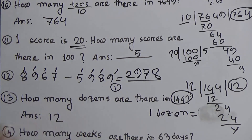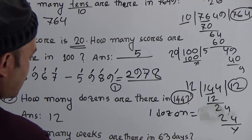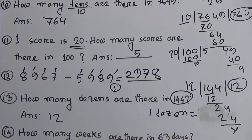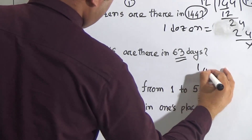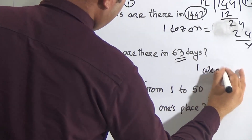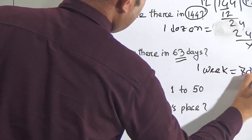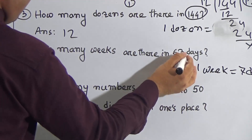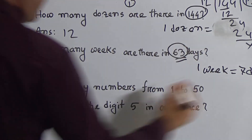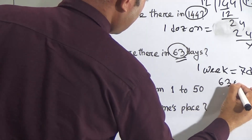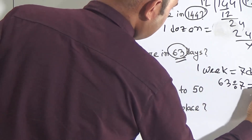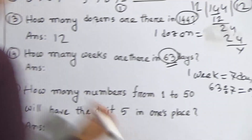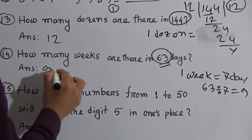How many weeks are there in 63 days? One week means seven days. So divide 63 by 7. You know that 7 nines are 63, so the answer is 9. There are 9 weeks in 63 days.